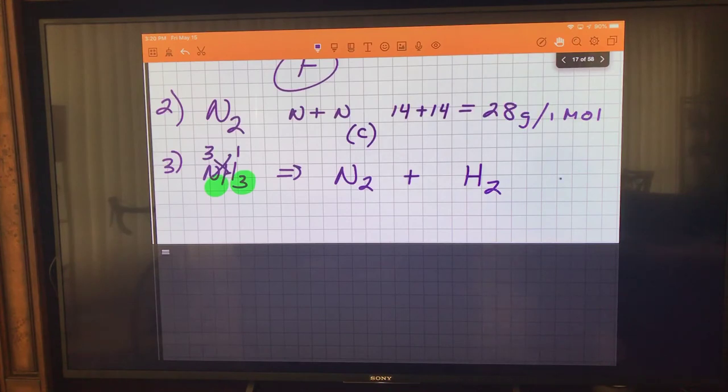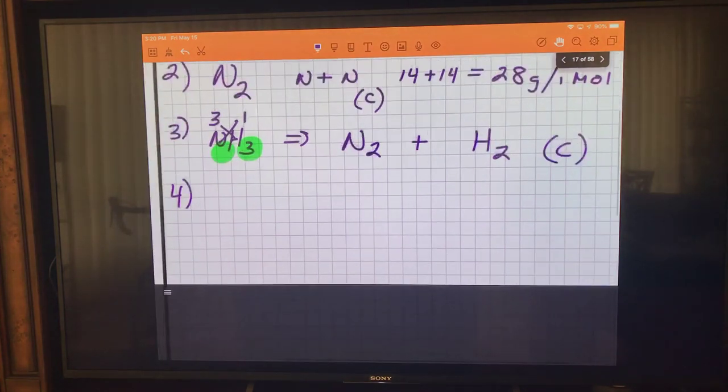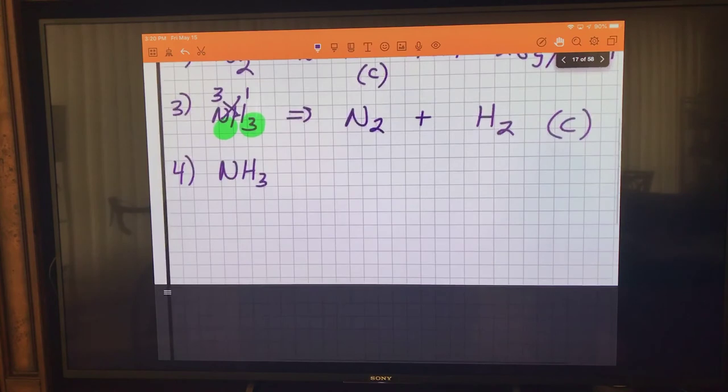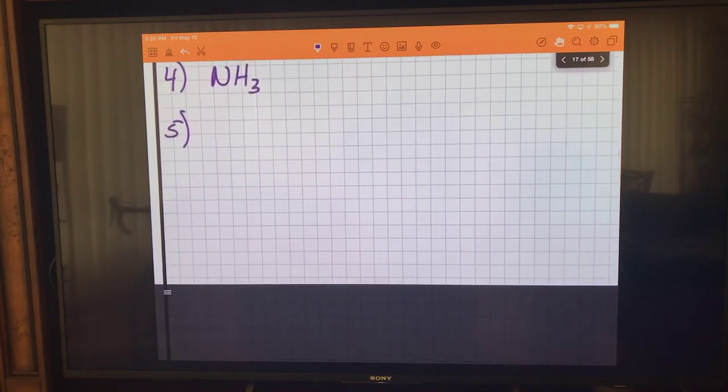Number four: limiting on a decomposition reaction. What limits it is always the one reactant, so in this case it's NH₃. That's it. What's on the left side, what we start with, limits it. When we run out, that's it.